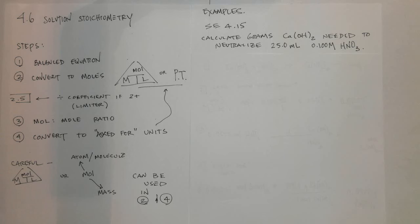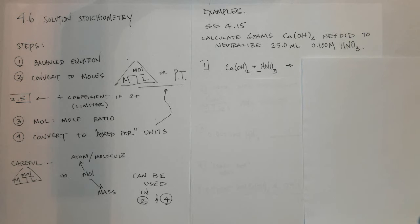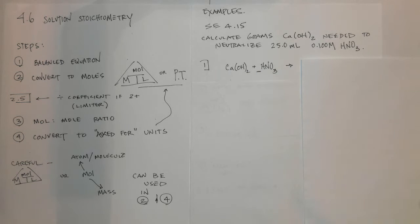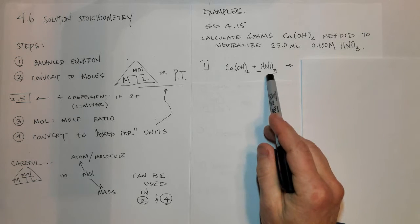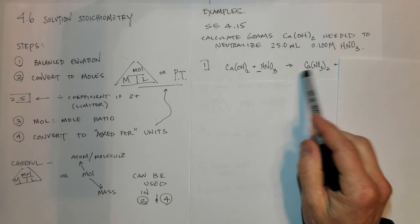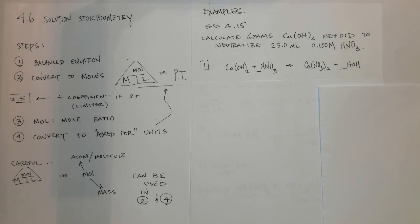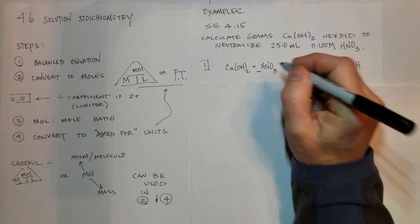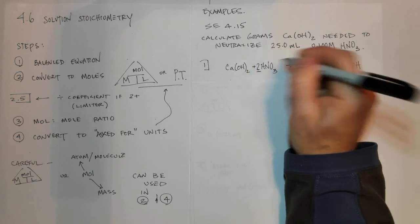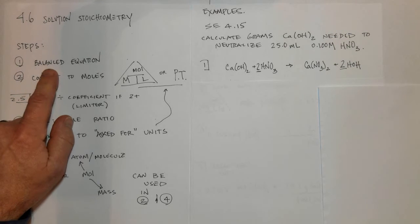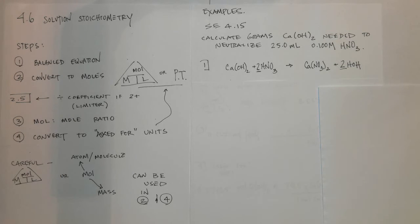Step number one: write the balanced chemical equation. Calcium hydroxide reacts with nitric acid, HNO₃. Take these cations and exchange them, just like we did with precipitation and acid-base reactions — this is an acid-base reaction. We get calcium together with nitrate. Don't forget calcium is +2 and nitrate is −1, so you need a 2 subscript. We also get HOH. Balancing gives a 2 in front of HNO₃ and a 2 in front of HOH. That's step one — the balanced chemical equation, which can sometimes be the trickiest part.